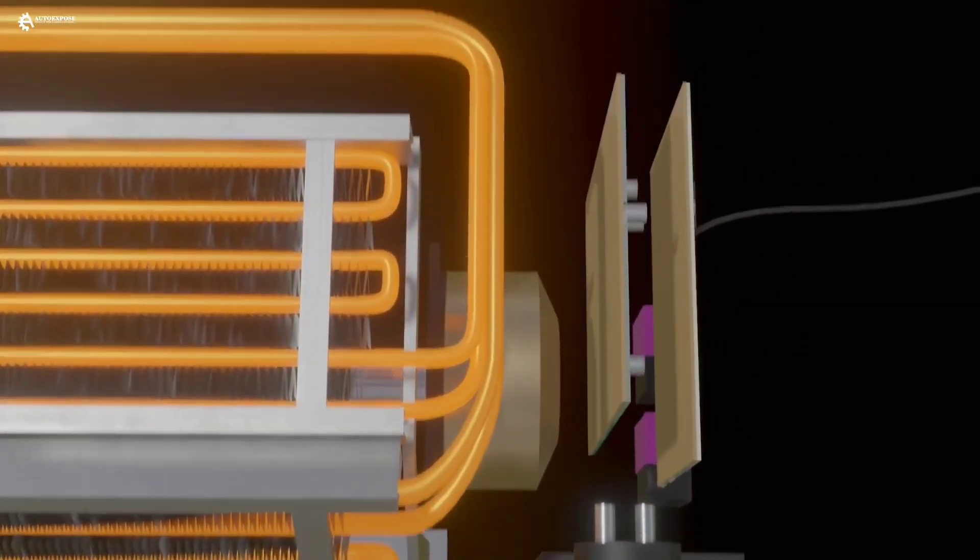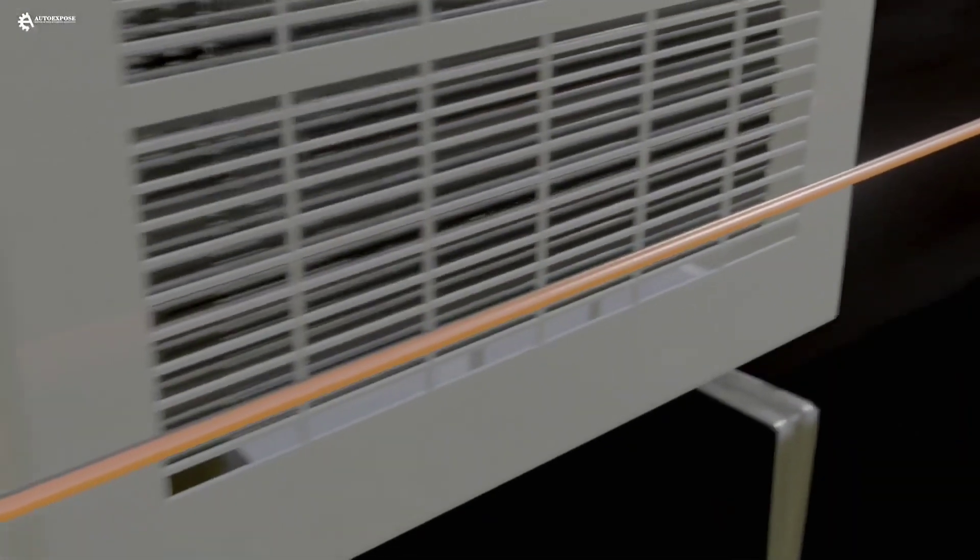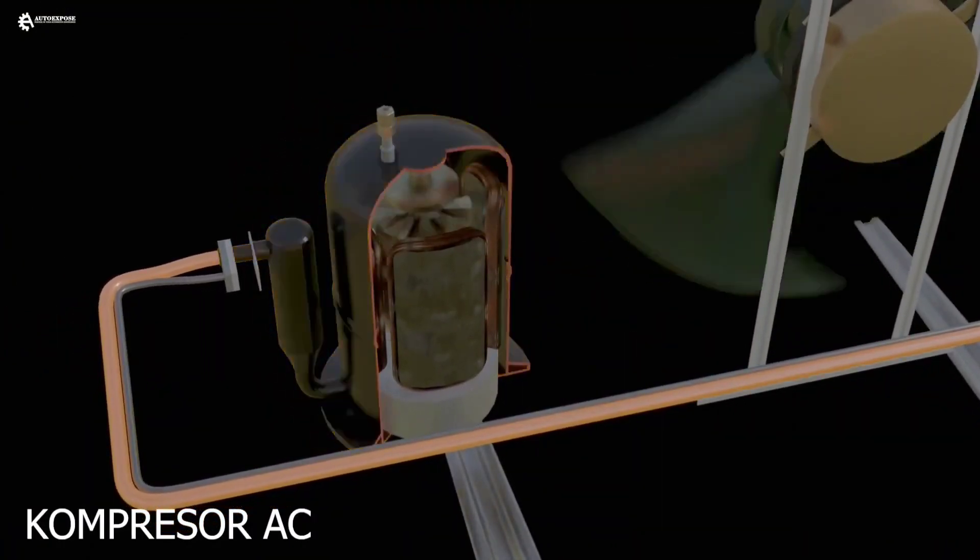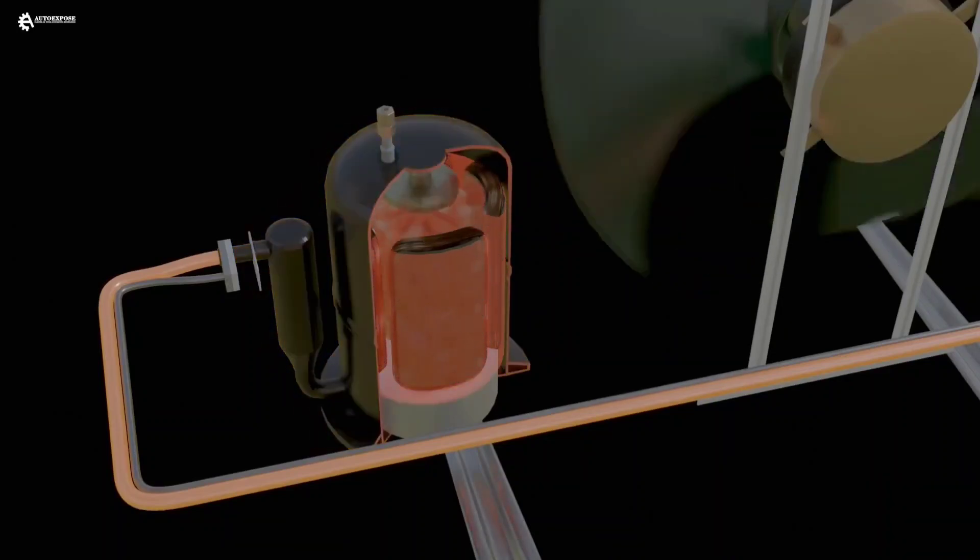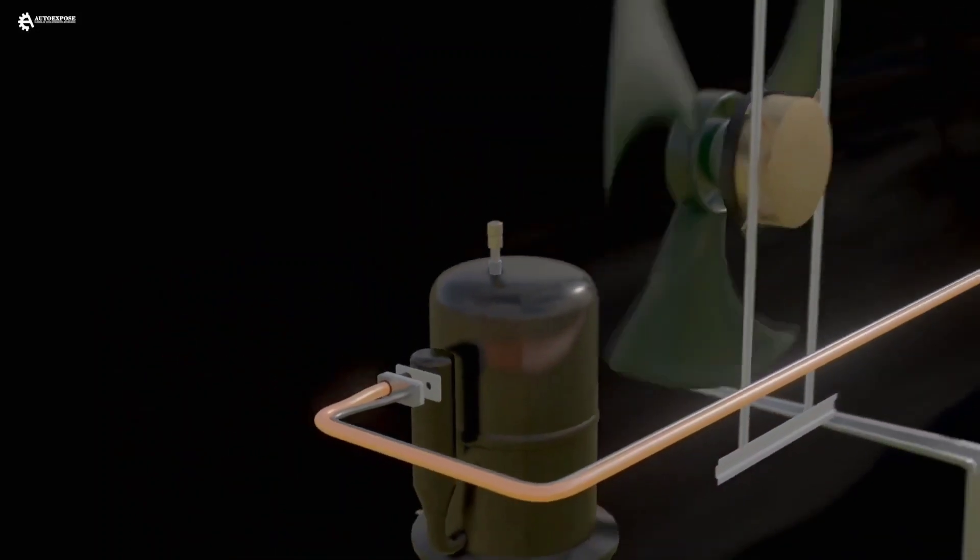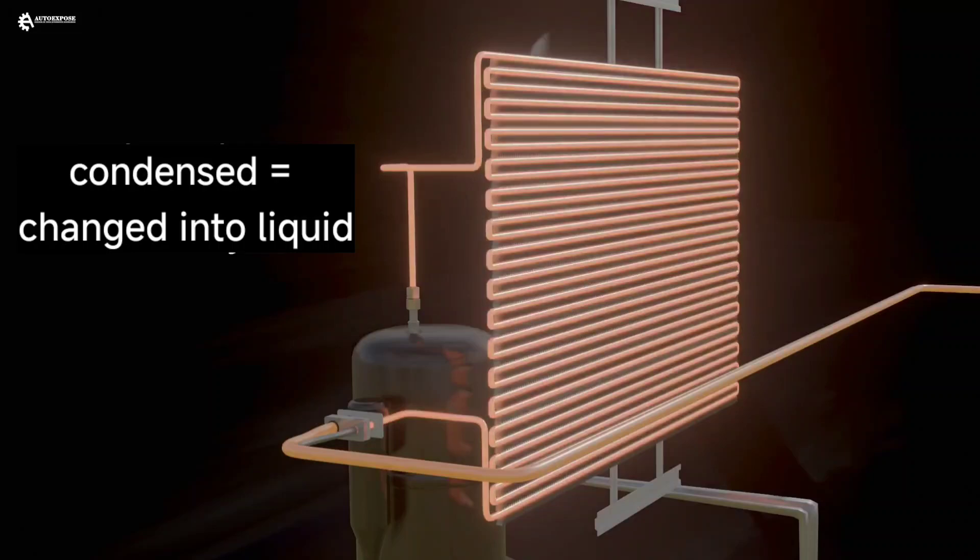Returning to the process in the evaporator, after absorbing heat, the temperature of the freon rises and the freon turns into gas. In this condition, the freon flows to the outdoor unit and enters a part called the compressor. In the compressor, the pressure of the freon is increased. After passing through the compressor, the freon has high pressure, but is still in the form of gas and heat.